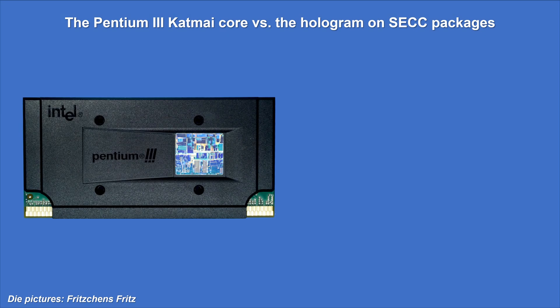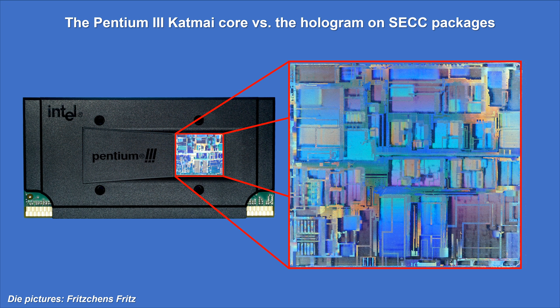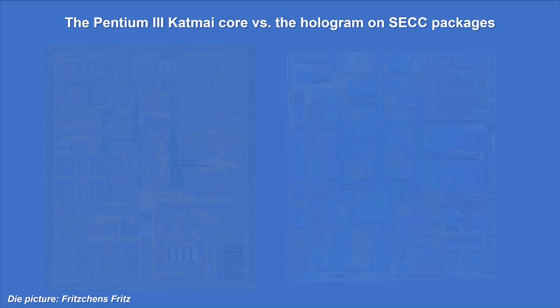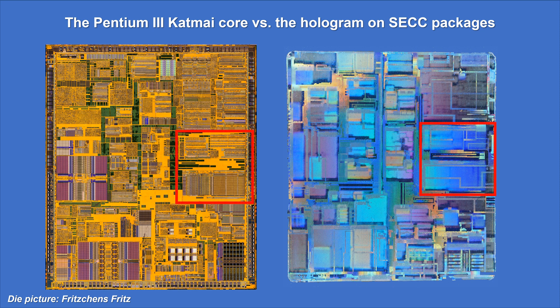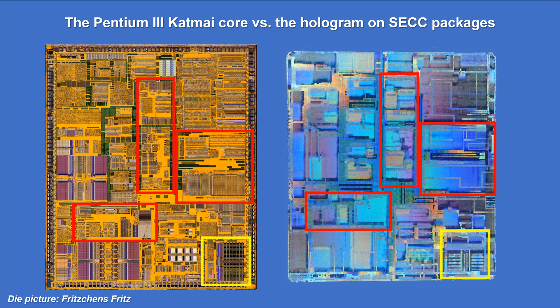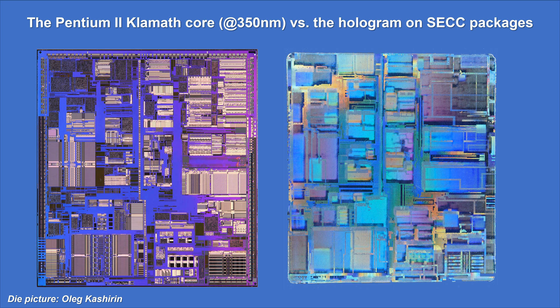Just for fun, I took a macro shot of the hologram sticker that is put on every SECC package. Comparing this with the real die shot reveals many similarities, like the sections marked here in red. But there are also differences — just have a look at the yellow section, for example. In the final Katmai implementation, this unit seems to have been turned 90 degrees counterclockwise. From this evidence, I get the impression that the hologram was made before the silicon design was finalized. Doing some further research, I found out that actually the hologram is not featuring the Pentium Katmai core at all, but the two-years-earlier-launched Pentium II core Klamath. It is quite a bummer to see Intel using the hologram for several years on SECC packages regardless of the CPU core — but it is just a gimmick.